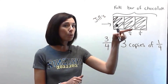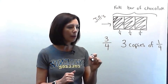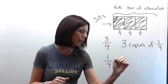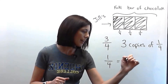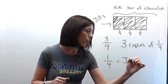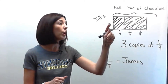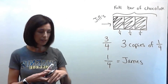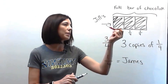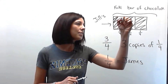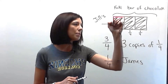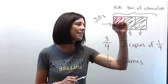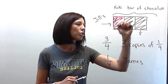So this is Jill's portion right there. James is supposed to get one-fourth, and again, that's one copy of a fourth, or one of these pieces. I'm going to use a different color here so we can see. So here is James' piece right there — he needs to get that much.